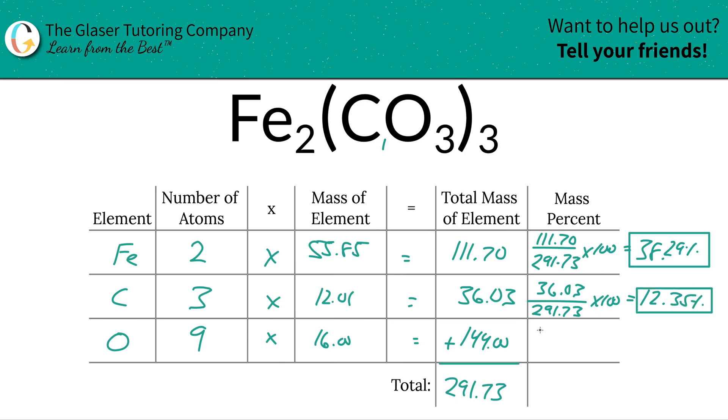And then last but not least, we're going to do oxygen here. So that's total mass of 144, 291.73, times that bad boy by 100. And we're going to get a percentage of roughly 49.36%.